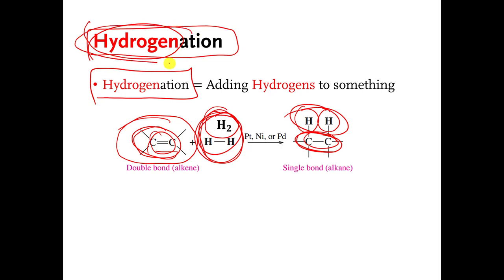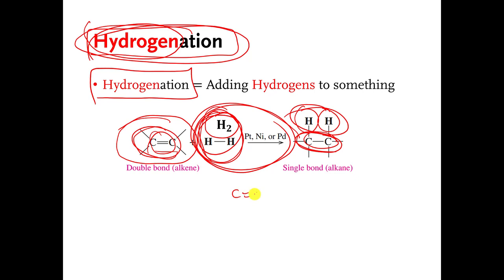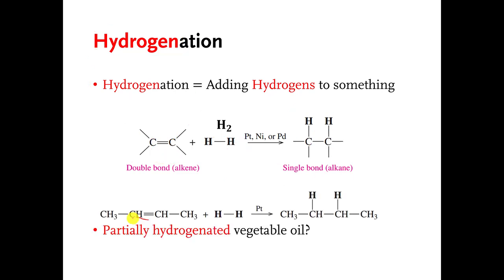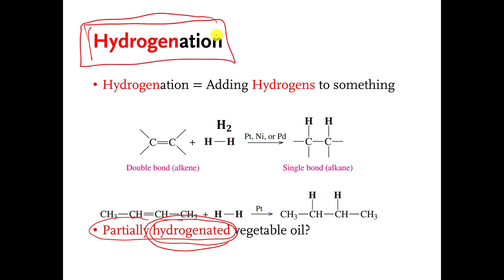So I want you to know what hydrogenation means. If you see a reaction where something has a carbon-carbon double bond, it turns into a carbon-carbon single bond, and hydrogen got stuck on — well, that's a hydrogenation reaction. If you have ever heard of partially hydrogenated vegetable oil, the word 'hydrogenated' here means the same thing as hydrogenation.